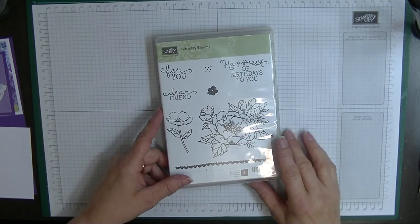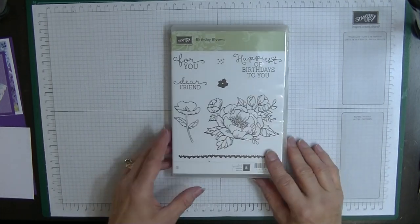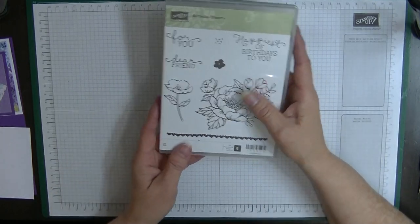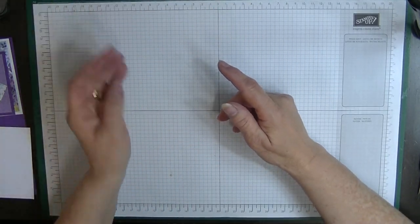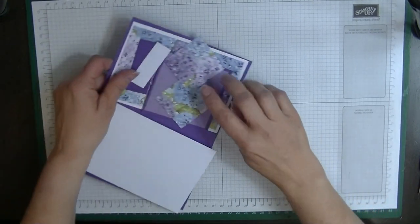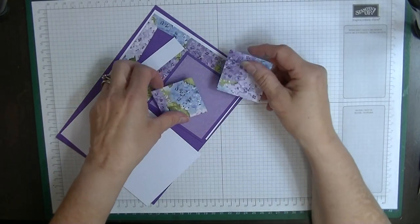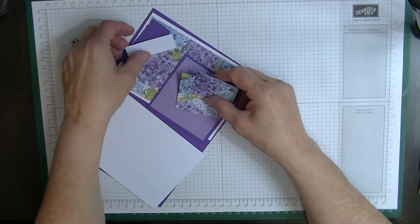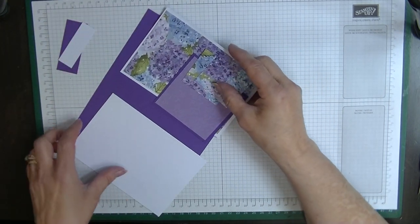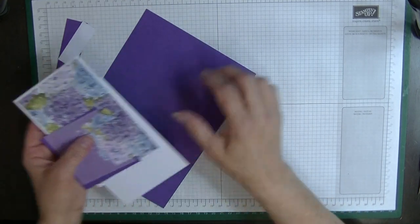Excuse that noise down here, that's my little blow heater. It is freezing here today. I'm really not looking forward to the rest of the winter. It's been so cold and wet. I'm going to be using some paper from the Hydrangea paper because I still had some left and I just thought it would look really pretty.